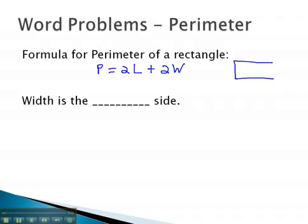This formula comes from having two lengths and two widths around the outside. Often, we are asked to give either the length or the width. We will remember that the width is always the short side, and the length is always the long side.